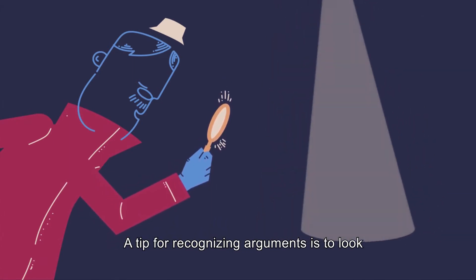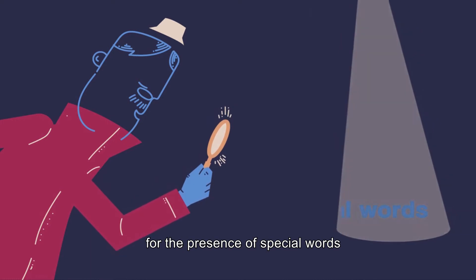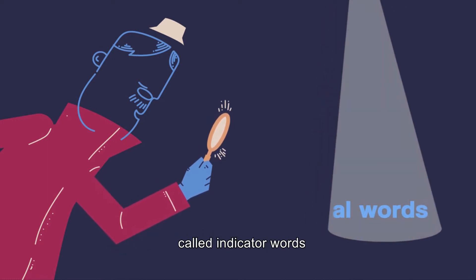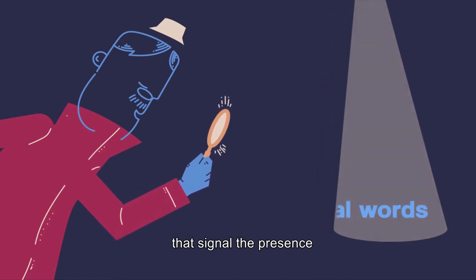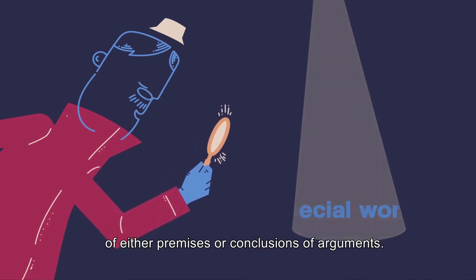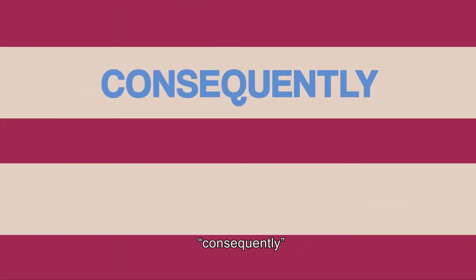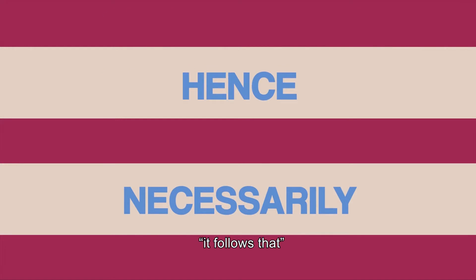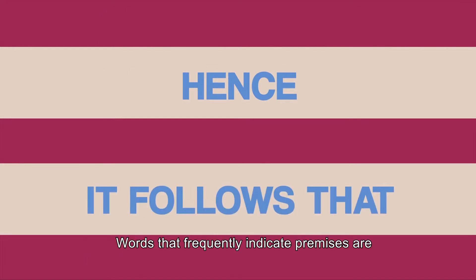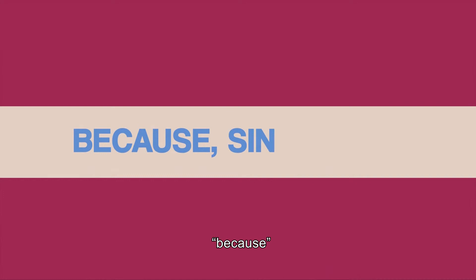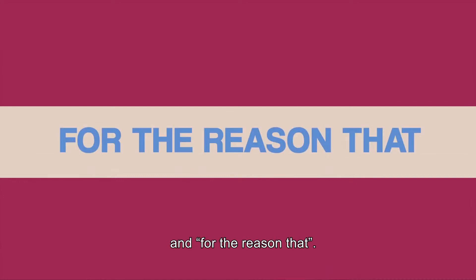A tip for recognizing arguments is to look for the presence of special words, called indicator words, that signal the presence of either premises or conclusions of arguments. For instance, the word 'therefore' serves to introduce conclusions, as well as 'consequently,' 'necessarily,' 'hence,' and 'it follows that.' Words that frequently indicate premises are 'because,' 'since,' 'for,' and 'for the reason that.'